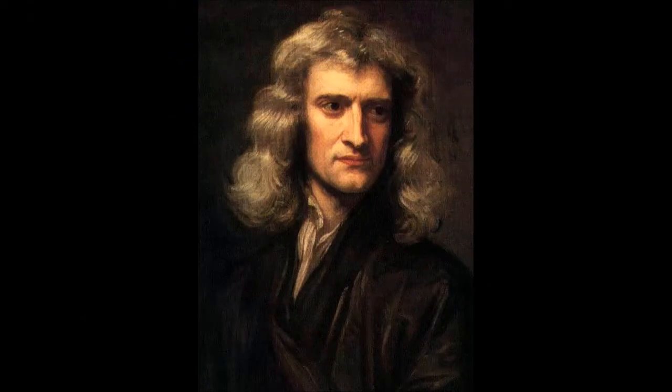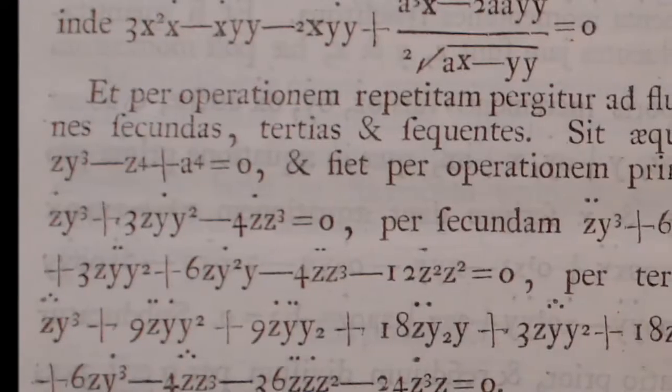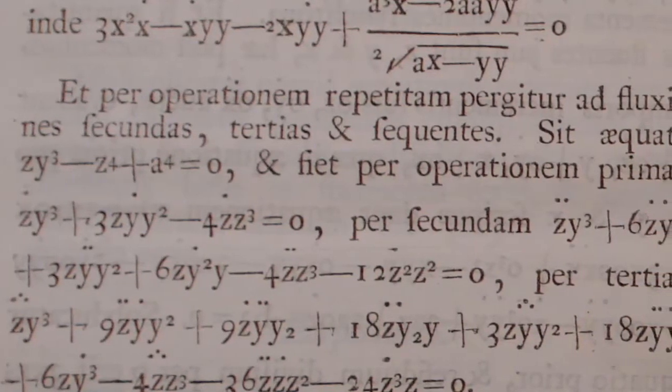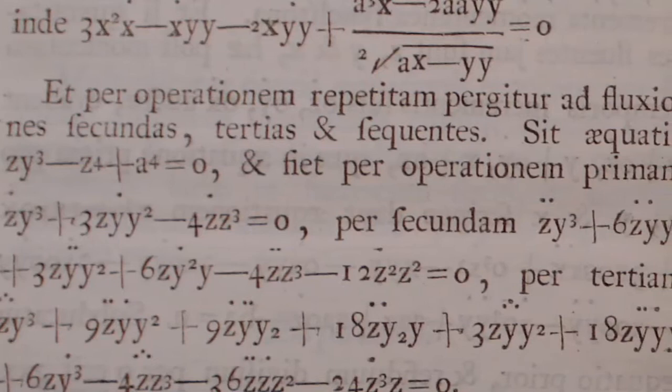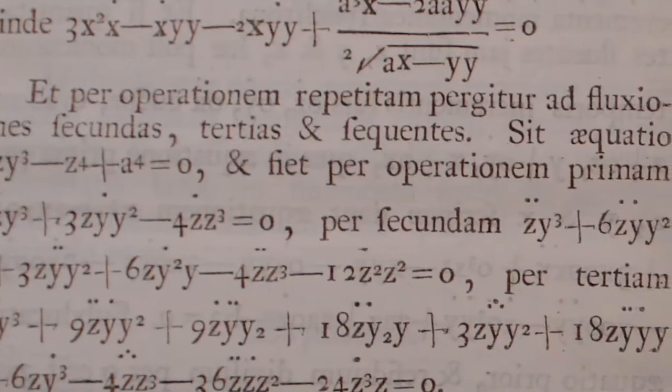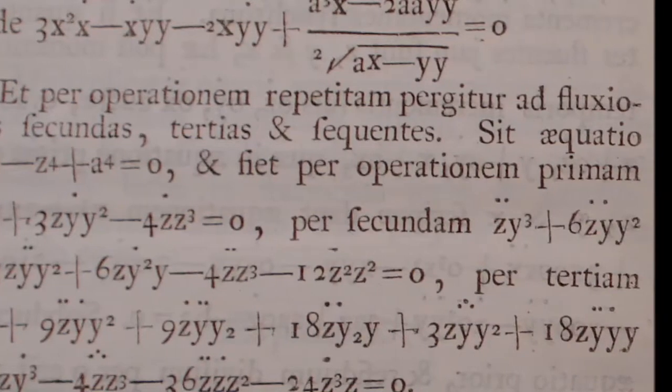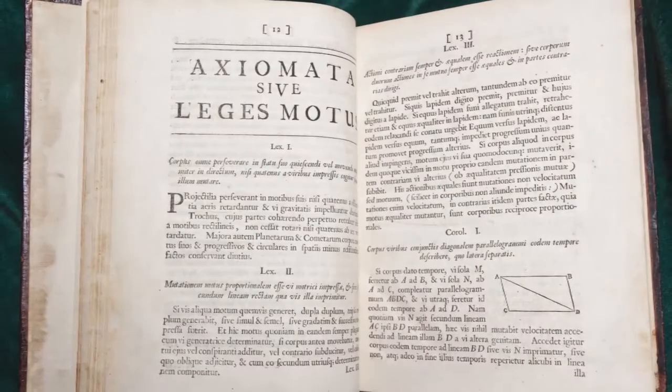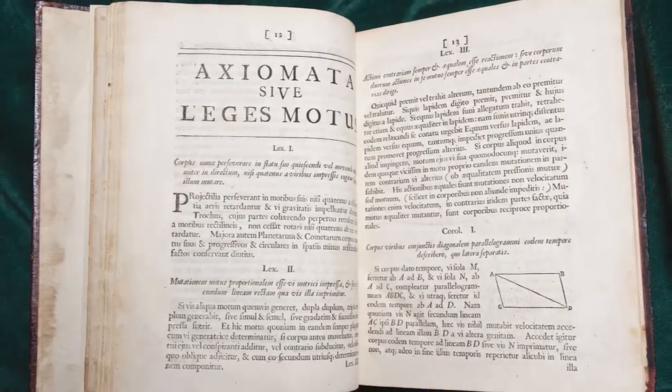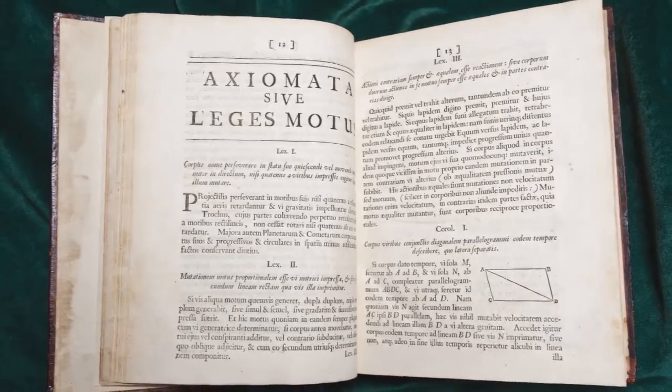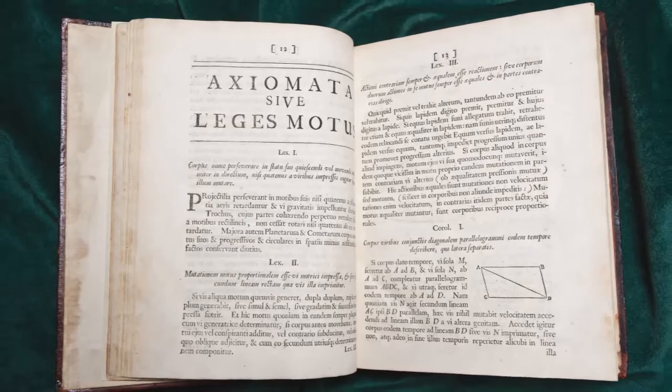Newton began work on his own in binomial theorem that would lead him to develop calculus. This would prove to be the most important mathematical development in centuries. The capabilities of calculus were unlimited in describing the universe in strict numerical terms. Newton's discoveries were not limited to mathematics alone, but also their application.